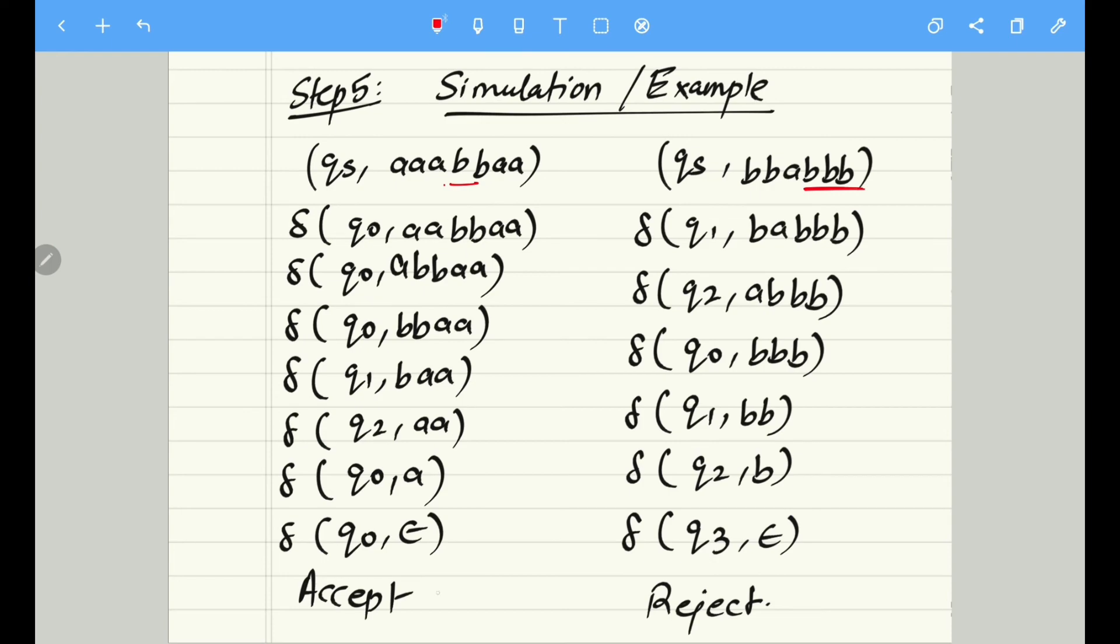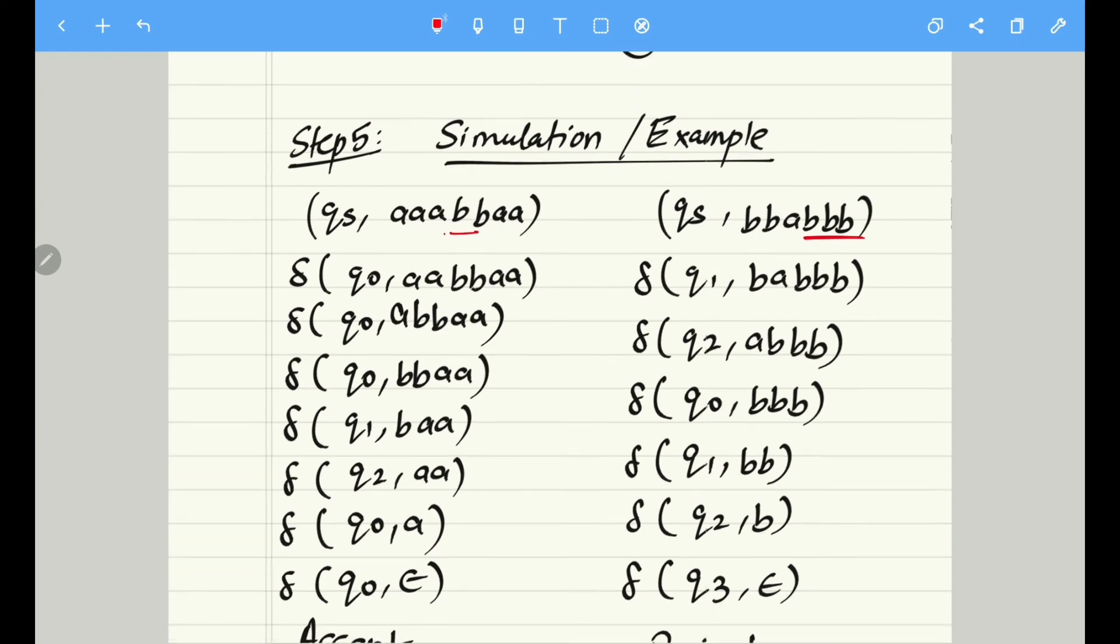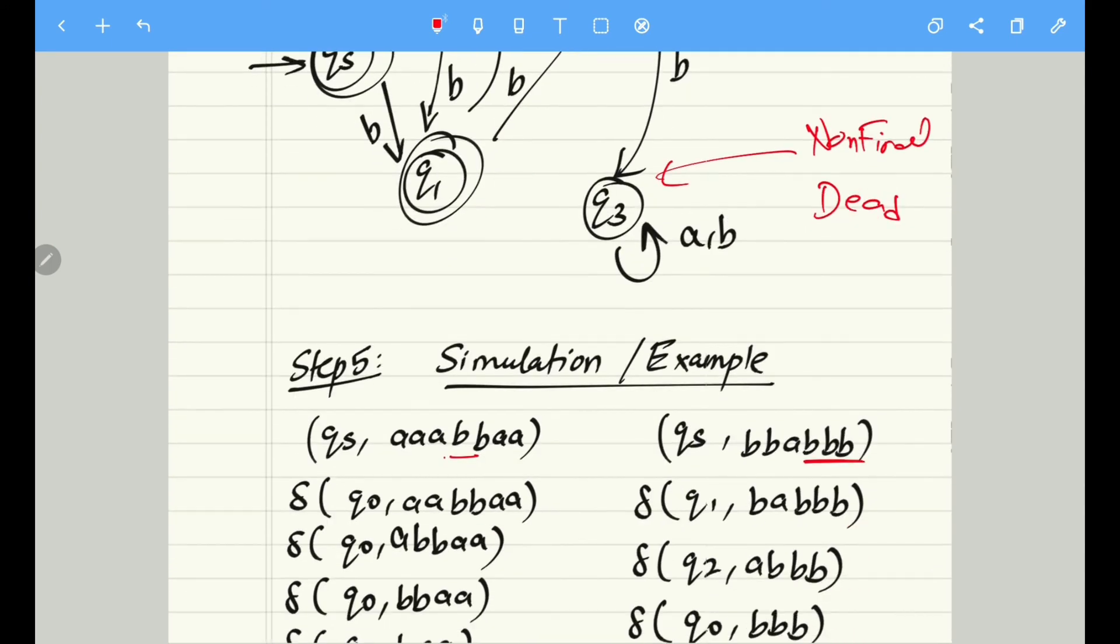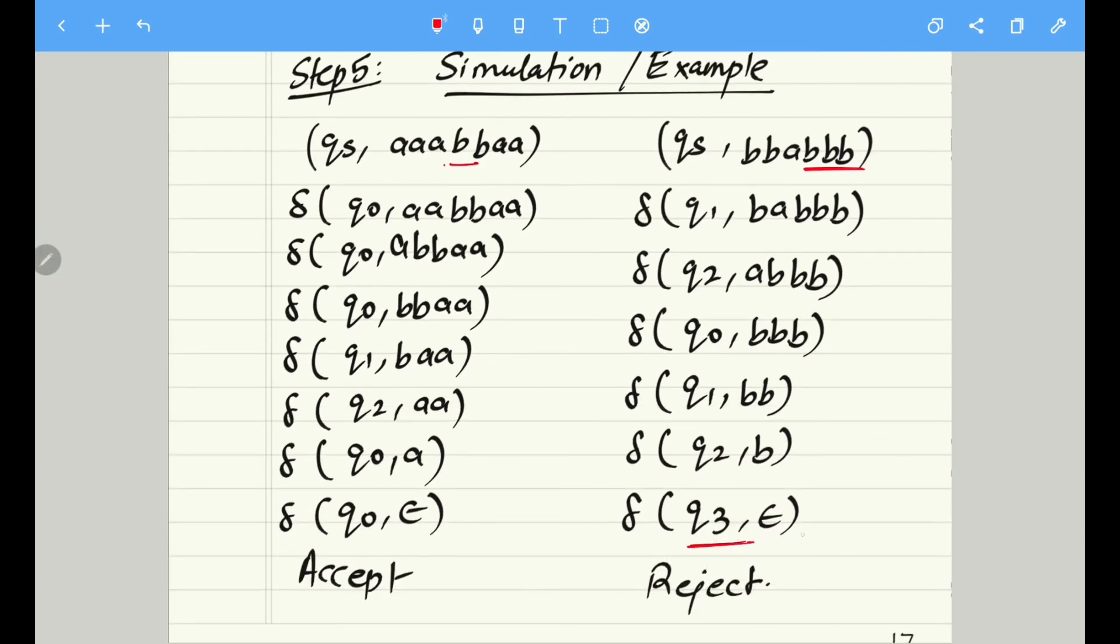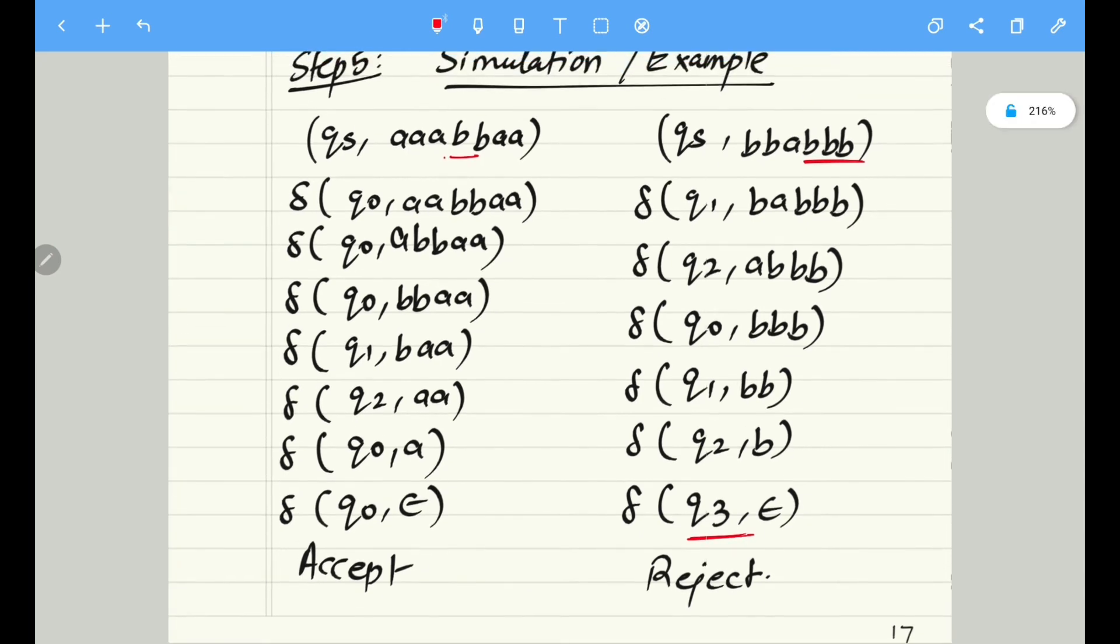And hence it is accepted because q0 this time is my final state, is one of the final states. Similarly, on the right-hand side, the string enters into q3, and as we know, q3 is a non-final state as well as a dead state, hence it gets rejected. So I hope you got the understanding of what exactly is a dead state and a trap state.